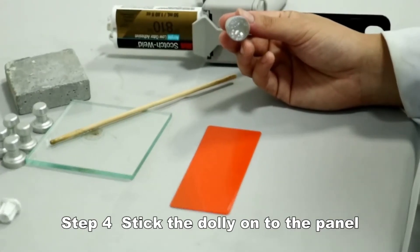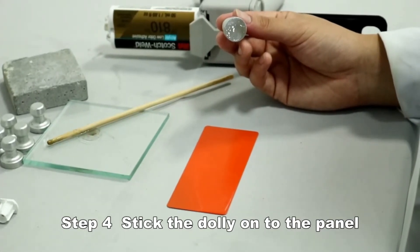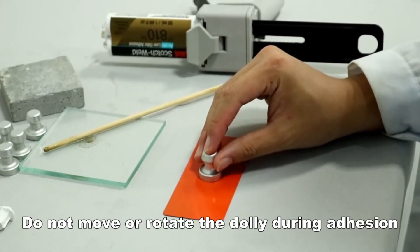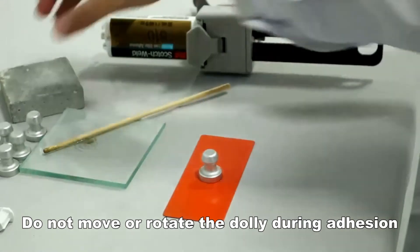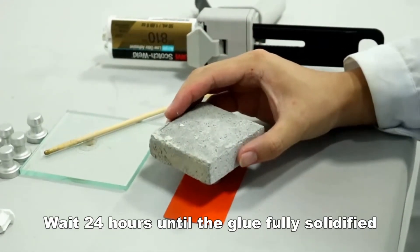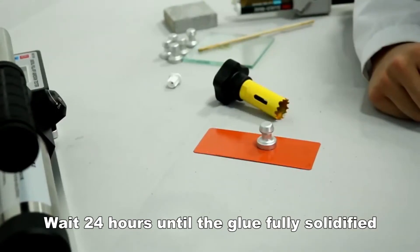Stick the dolly onto the panel. Press the dolly vertically. Do not move or rotate the dolly during adhesion. It is suggested to use a chunk to press it. Wait 24 hours until the glue is fully solidified.